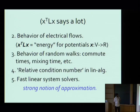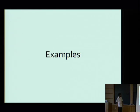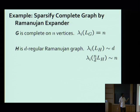Let me show you some examples of what sparse sparsifiers look like. The first example is something everyone has probably seen before. Suppose the graph G I want to approximate is a complete graph on n vertices — it's well known that all the non-zero Laplacian eigenvalues are equal to n. I'm going to approximate this by taking H to be a d-regular Ramanujan graph, which is an expander graph. All of its eigenvalues are approximately equal to D.